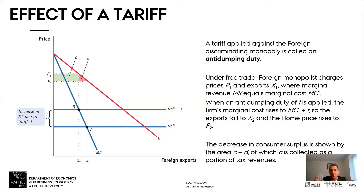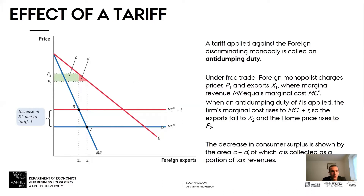There's a marginal cost that's constant — just for simplicity, though it doesn't really matter — called MC*. Without tariffs or anything else, this foreign monopolist charges a price P1, given by the intersection between the marginal revenue curve MR and the marginal cost curve MC*.